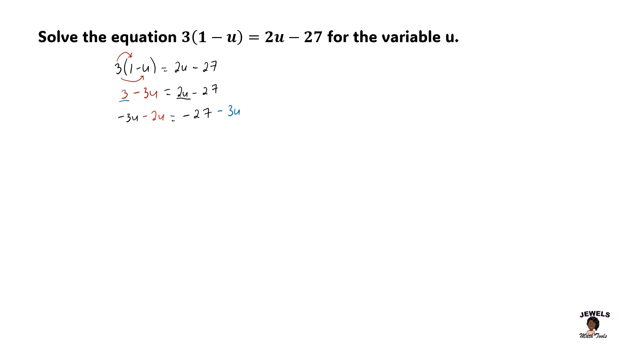So now that we have collected our like terms together, now let's start simplifying our equation. So 3u, negative 3u minus 2u. Remember that with negatives, we're going to add the numbers, which gives us 5u, and we're going to keep the negative sign. So the same thing here. We have our negative 27 minusing 3. And we're going to add the numbers together. So 27 plus 3 will give us 30. And then we're going to keep our negative sign.